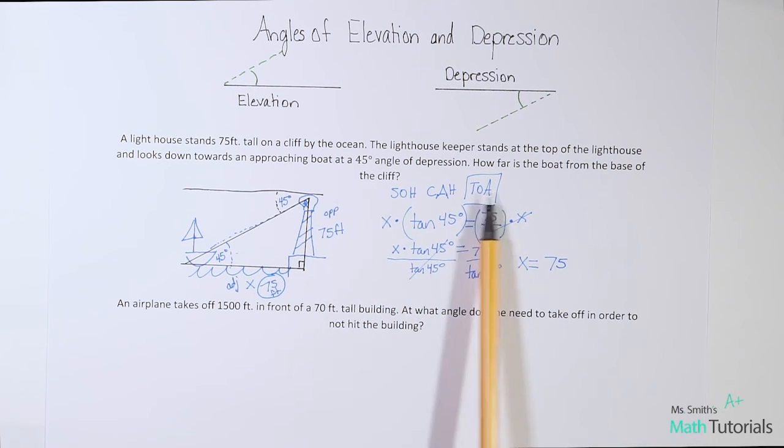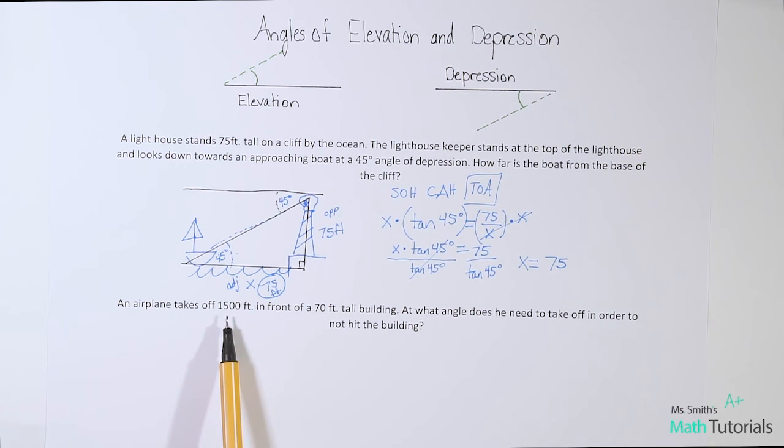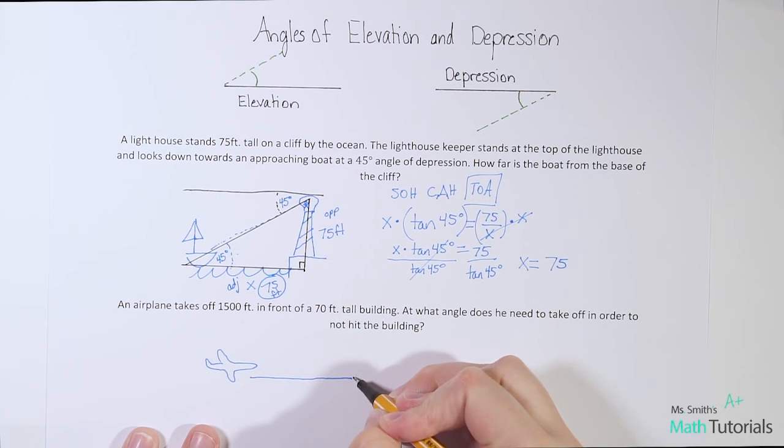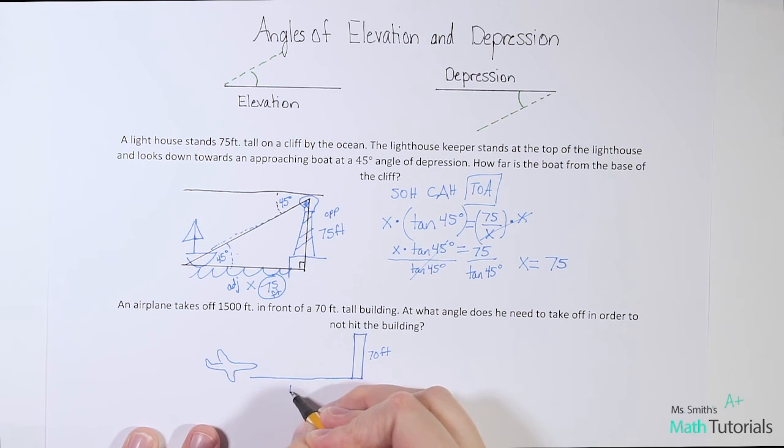If you want to check that out, definitely watch my video on special right triangles. No matter what, you can always solve it. This would technically be the long way. An airplane takes off at 1500 feet in front of a 70 foot tall building. At what angle does he need to take off in order to not hit the building? Let's draw this.